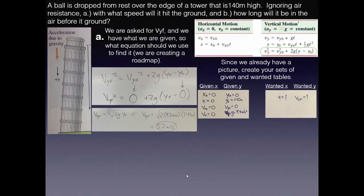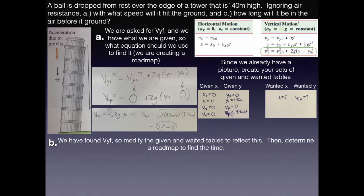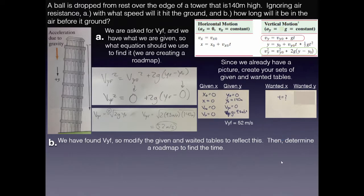For part (b), how long will it be in the air? Now that we know vyf, we move it to the known quantities. In the x-direction, every term is zero — no change there. In the vertical equations, we look for the simplest equation to find t. Since we now know vy, vy₀, and g, the first vertical equation — vy = vy₀ + g·t — is the one to use, with t as the only unknown.